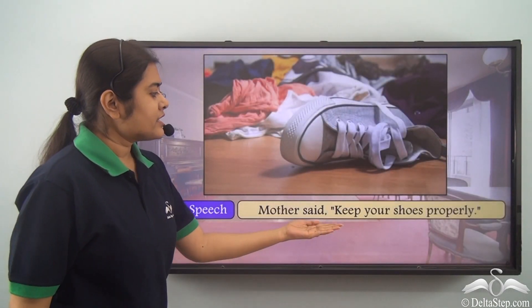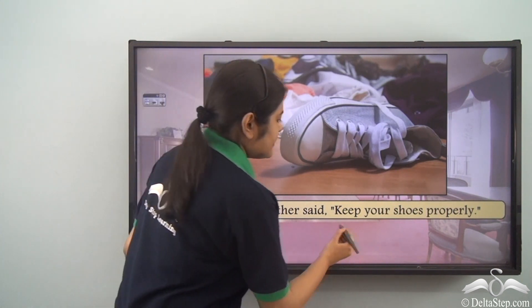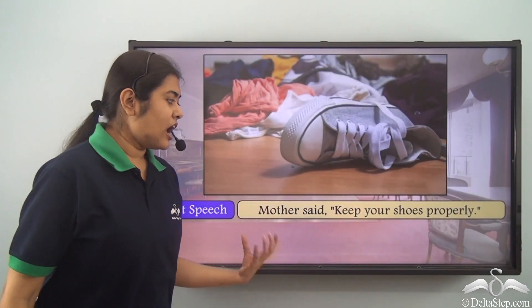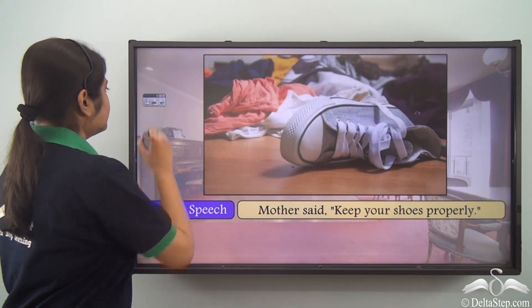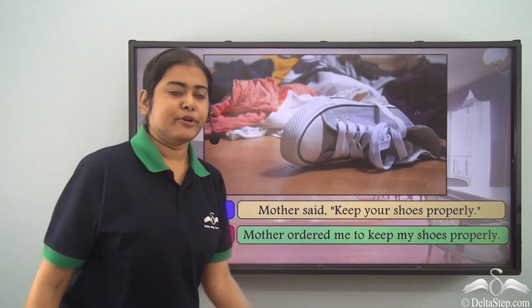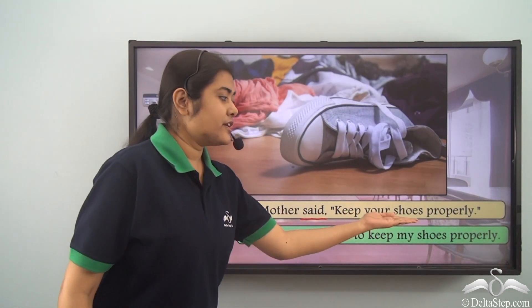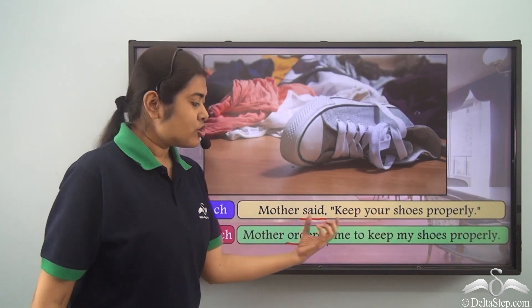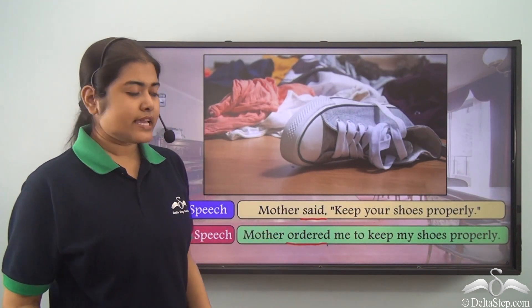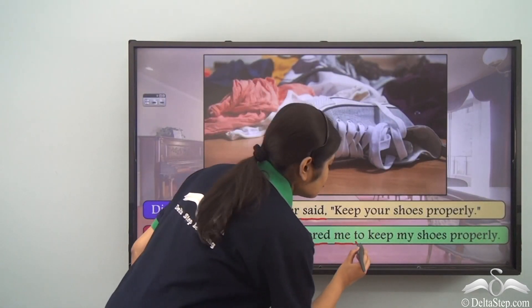Mother said, 'Keep your shoes properly.' If you read this sentence carefully, you see that it is showing an order. So how are we going to write this in indirect speech? We are going to write: Mother ordered me to keep my shoes properly. So 'said' becomes 'ordered' because here we have an order or instruction given. The person ordered is not mentioned, so we can take it as if Mother is ordering me.